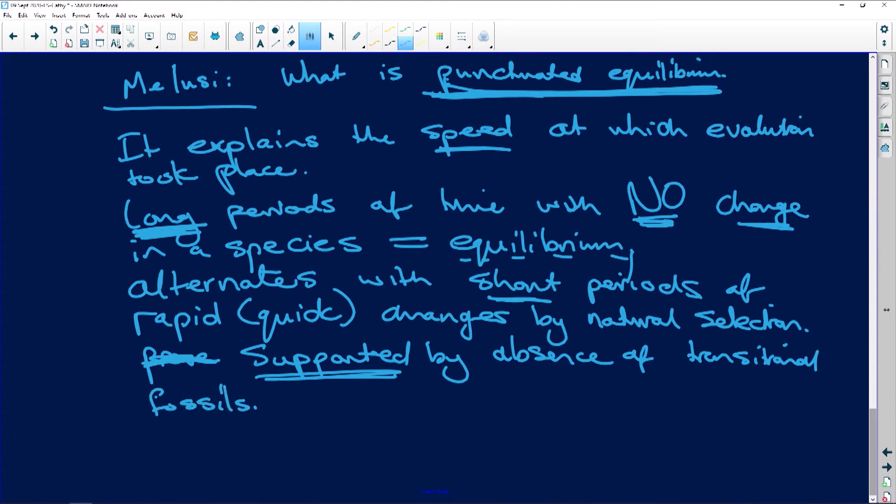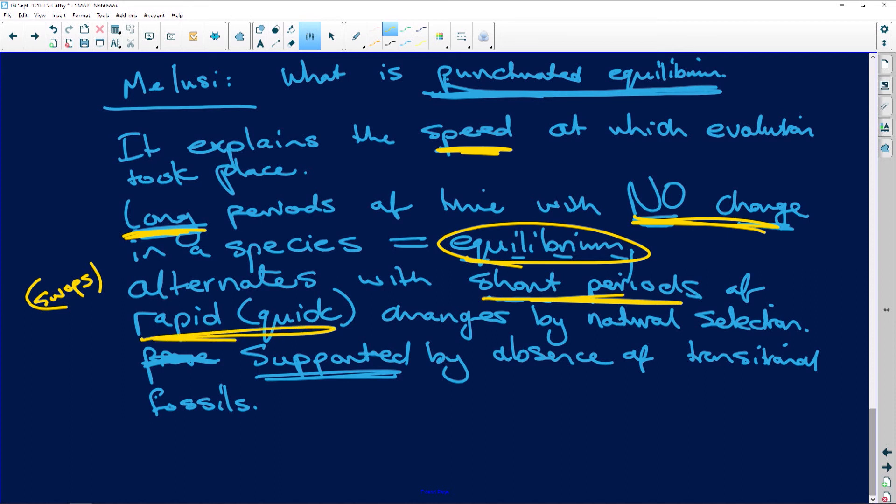Okay, so let's just quickly check this and then I'll go to what a transitional fossil is. So it explains the speed at which evolution took place. You have long periods, no change, that's your equilibrium. Then that swaps or alternates, you could also say swaps, with short periods of rapid changes, and it's supported by the absence of transitional fossils.